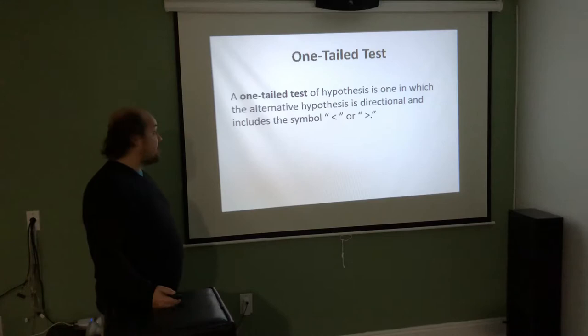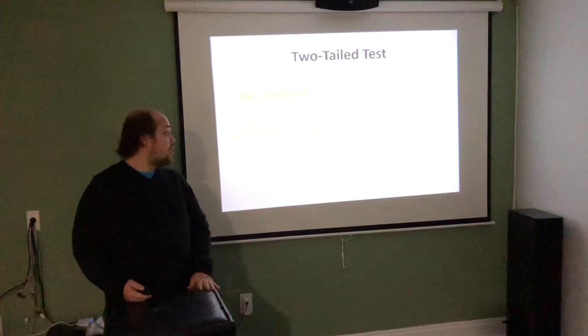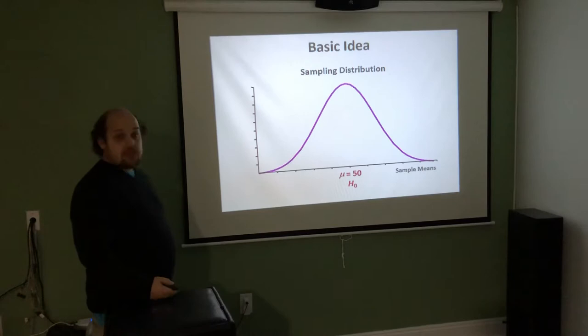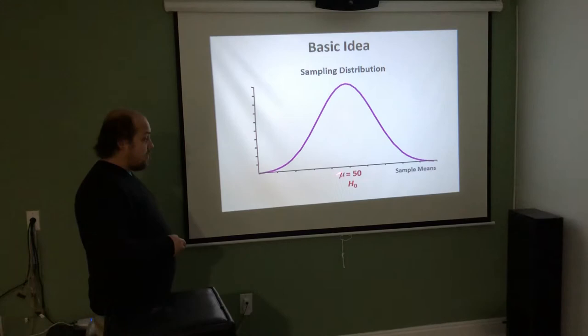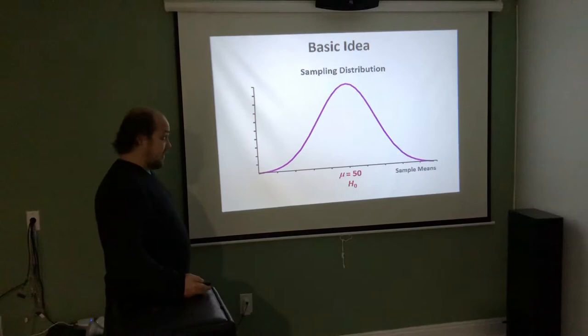A one-tailed test of hypothesis is one in which the alternative hypothesis is directional and includes the symbol less than or greater than. A two-tailed test is when the alternative hypothesis says 'not equal to.' The general idea is that we take a sampling distribution and center it at the given mean from the null hypothesis — what we're trying to disprove.